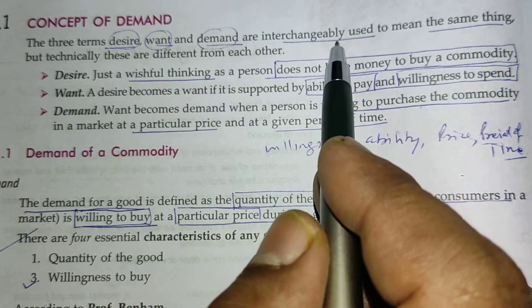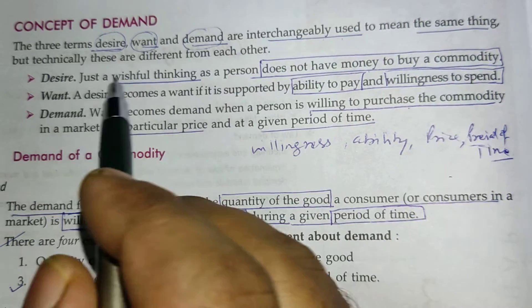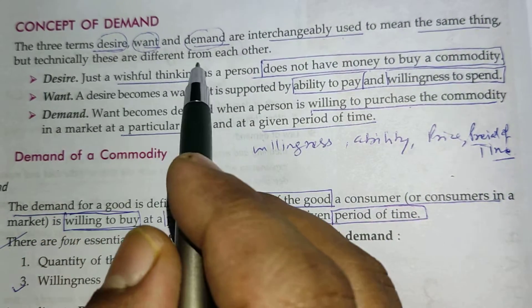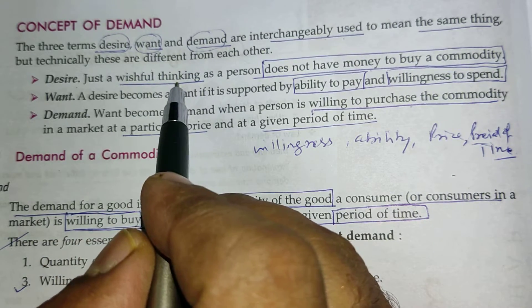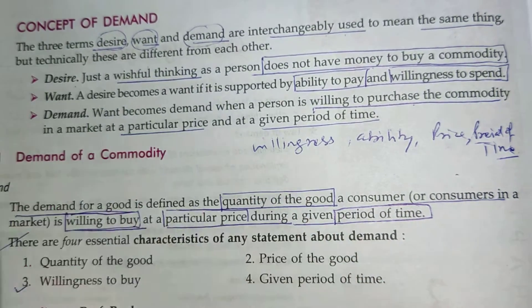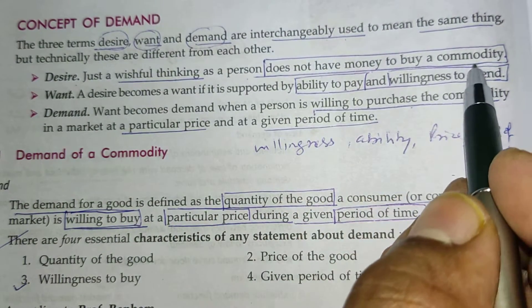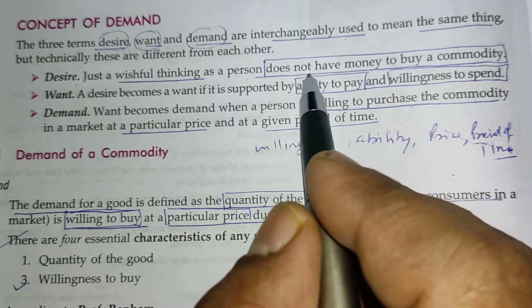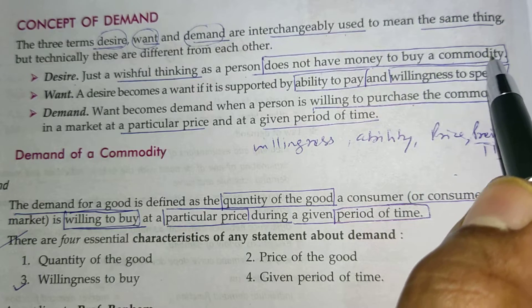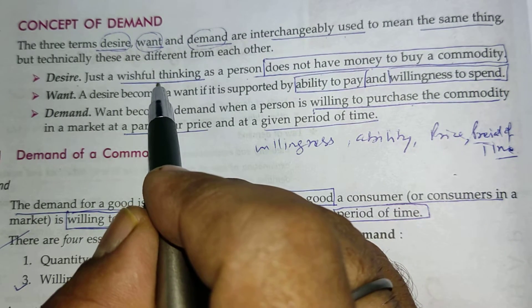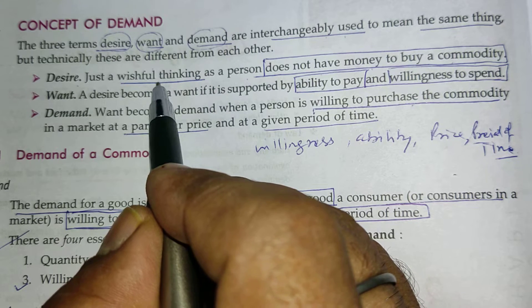These three terms — desire, want, and demand — are interchangeably used to mean the same thing, but technically they are different from each other. Desire is just a wishful thing. When a person does not have money to buy a commodity, it remains just a desire. For example, a desire to fly in an airplane.